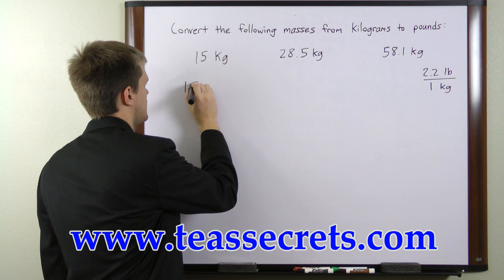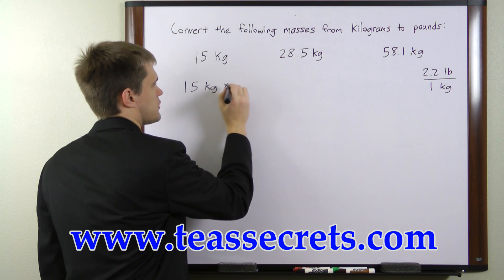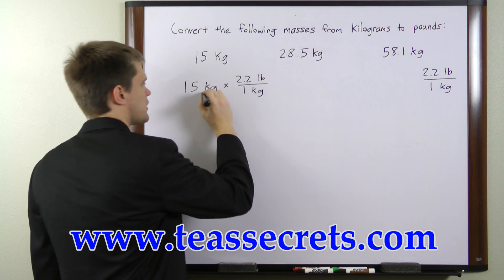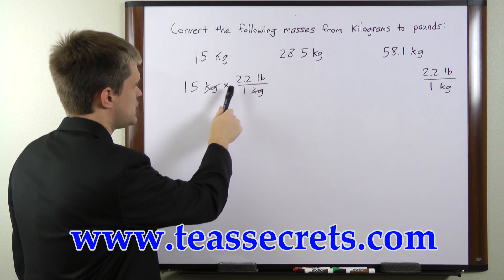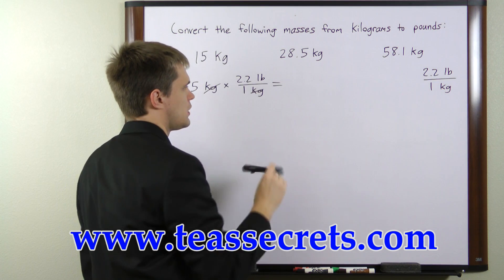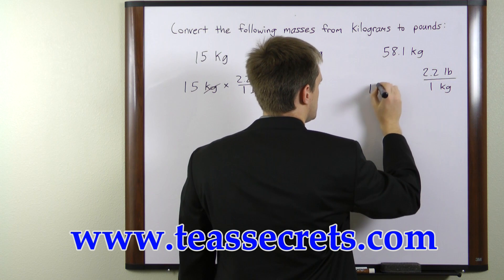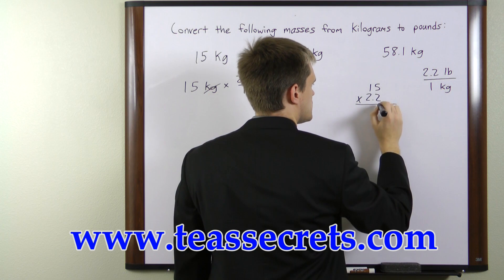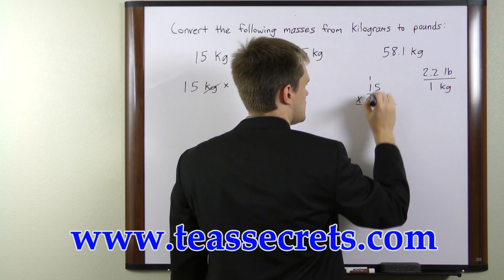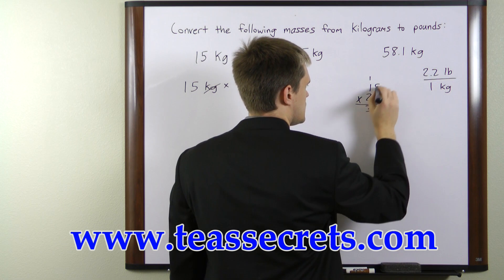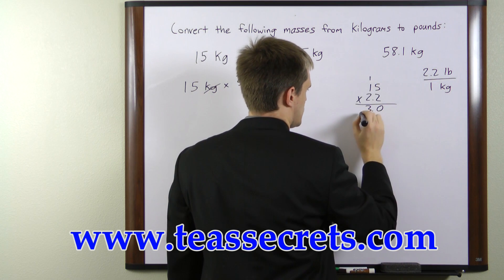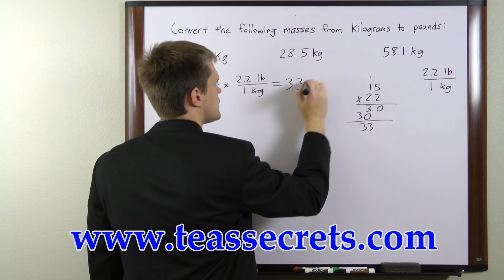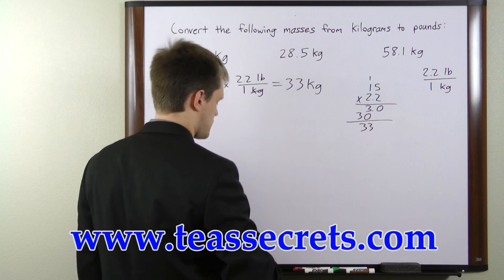First we have 15 kilograms. We're going to multiply it by 2.2 pounds per one kilogram. The kilograms will cancel, and we're left with 15 times 2.2 pounds. We'll do that multiplication: 2 times 5 is 10; 2 times 1 is 2 plus 1 is 3; 2 times 5 is 10; 2 times 1 plus 1 is 3. This gives us — I'm sorry — 33 pounds.